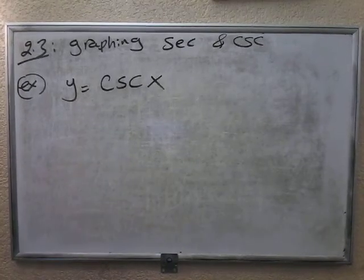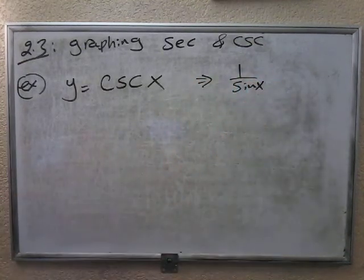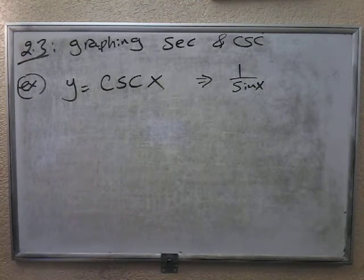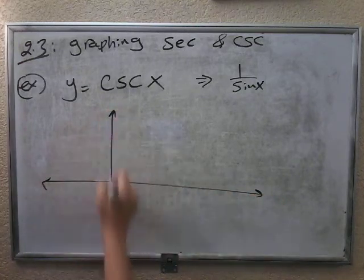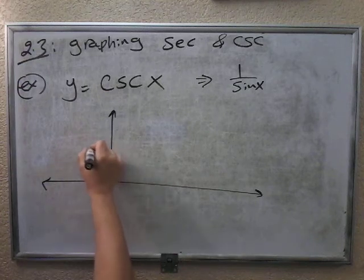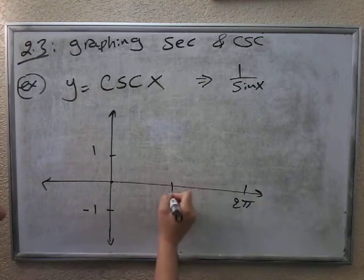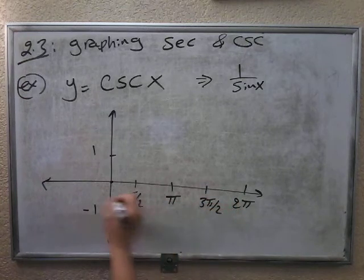Now we're going to graph the cosecant function. Remember, cosecant is just 1 over sine of x. Every time sine of x gives you 0, 1 over 0 is undefined, so we're going to have vertical asymptotes again. First, I'm going to graph the sine function. It starts from 0, the maximum point is 1 and negative 1. This is 2 pi, pi, pi over 2, and 3 pi over 2.